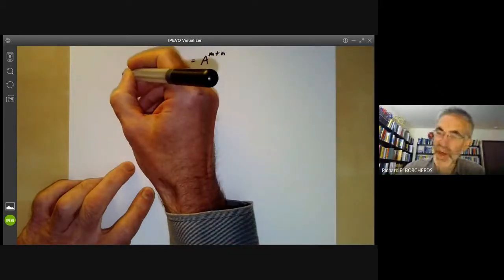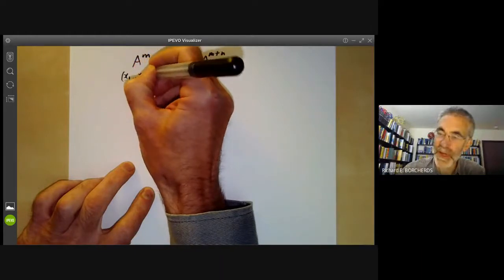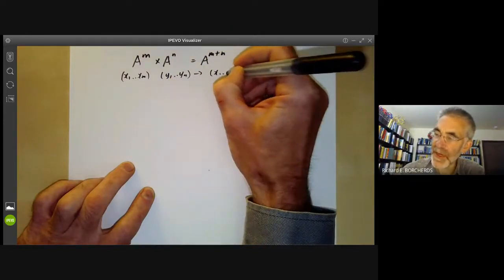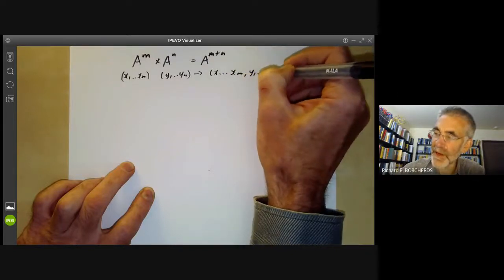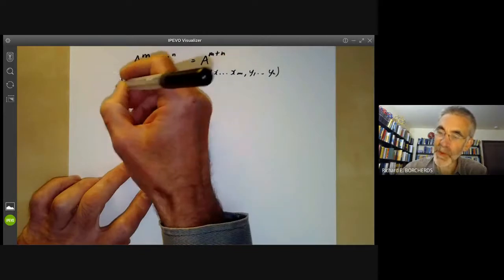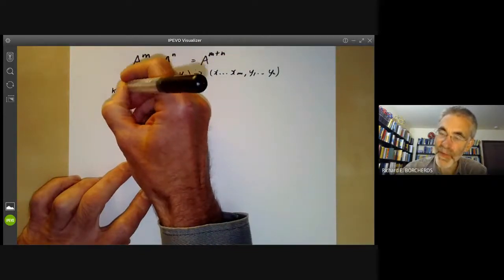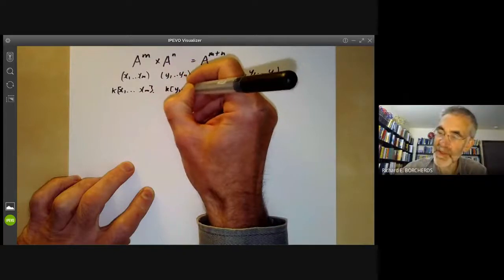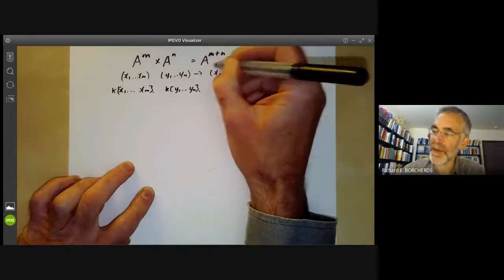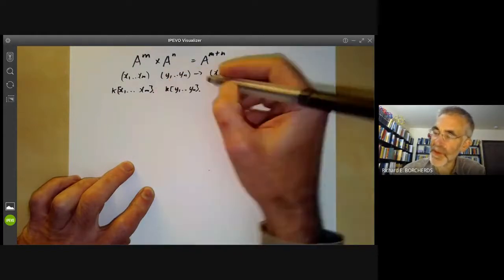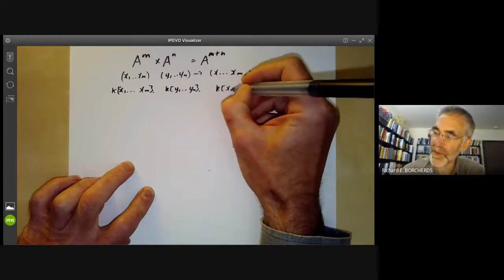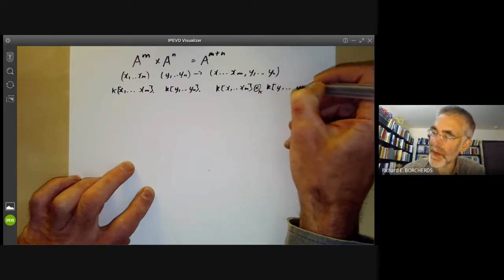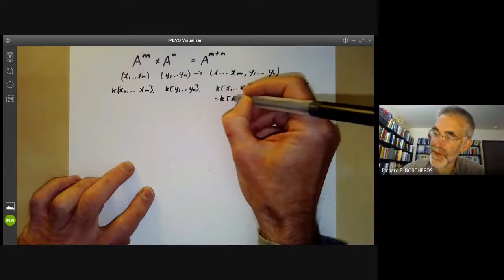We've got a pretty obvious map: if you've got points x_1 up to x_m and points y_1 up to y_n, this just gives you a vector (x_1, ..., x_m, y_1, ..., y_n). In terms of coordinate rings, you've got the ring of polynomials in m variables and the ring of polynomials in n variables, and the coordinate ring of this affine space is just the tensor product k[x_1,...,x_m] ⊗_k k[y_1,...,y_n], which is the ring of polynomials in all these variables.